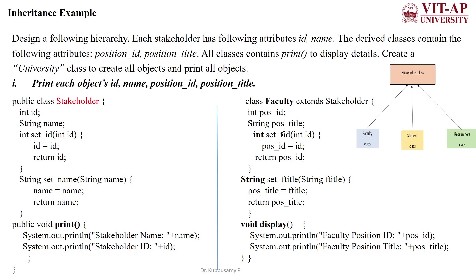Here we will discuss the example for the inheritance concept. The question requires us to construct the following hierarchy: the Stakeholder class, which has three child classes — Faculty, Student, and Researchers.